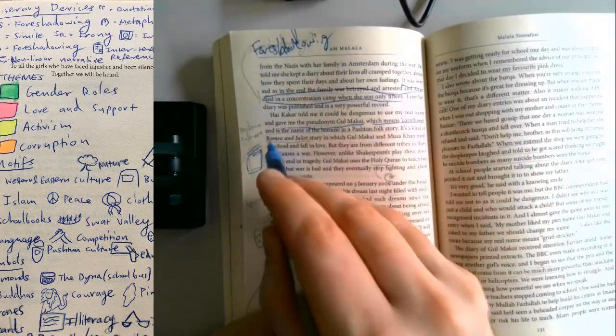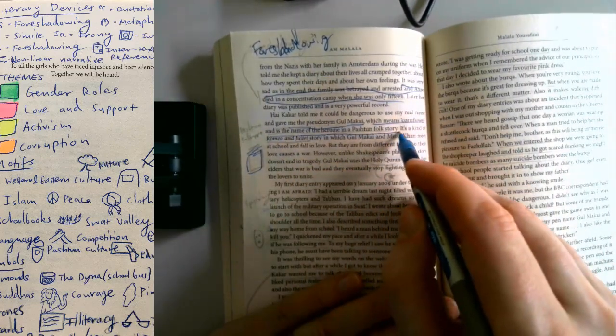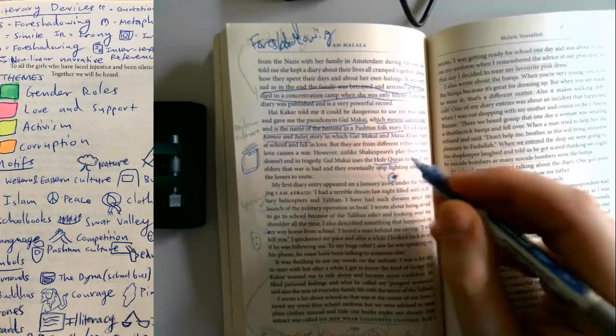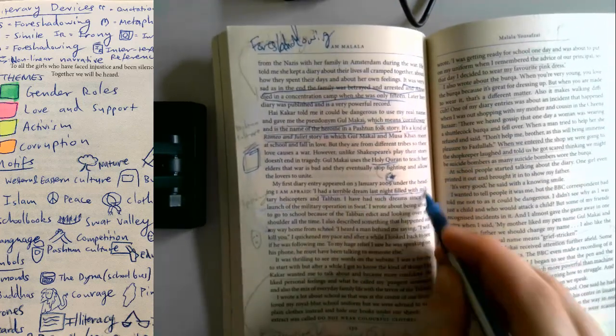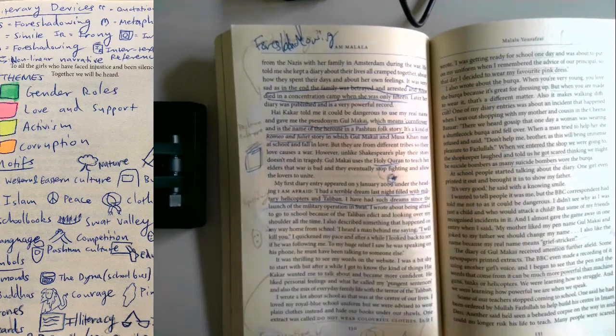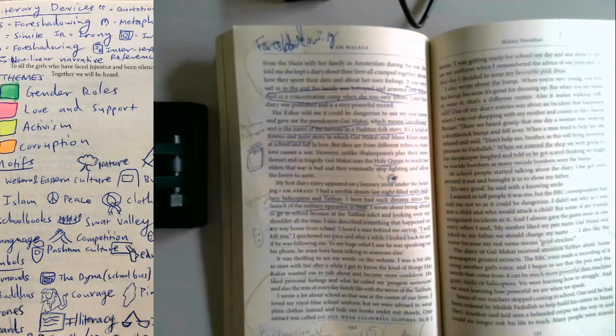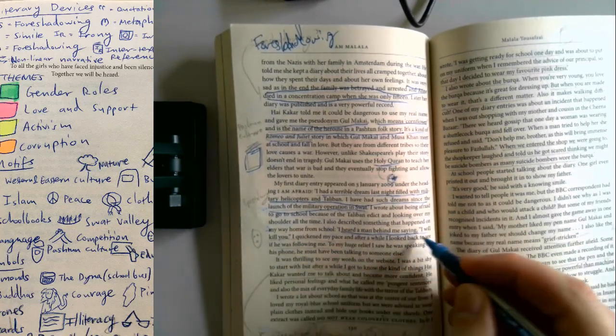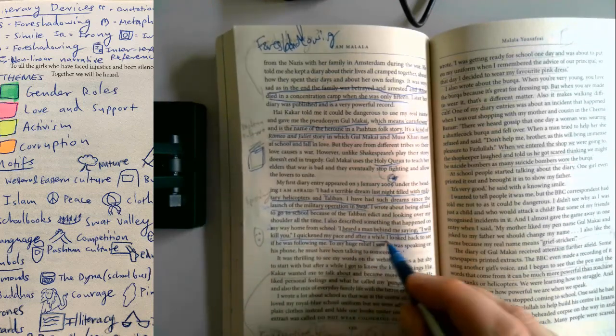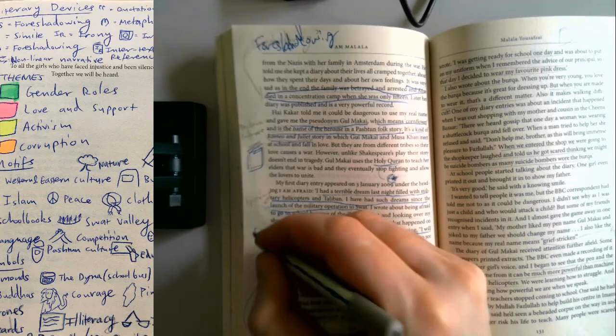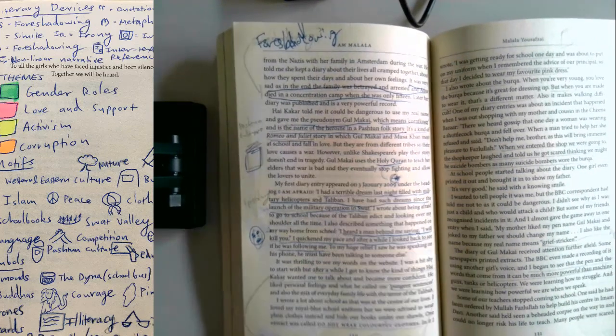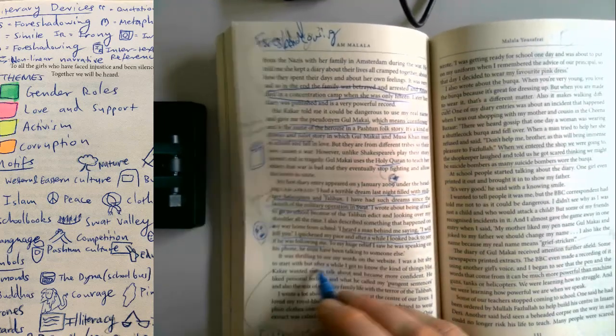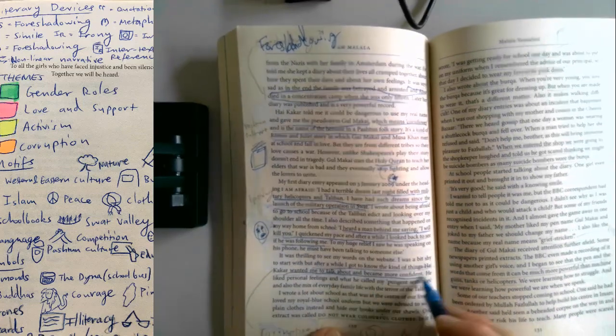The pseudonym Golan Makai, which means Cornflower, is the name of the heroine in a pastoral folk story, kind of a Romeo and Juliet story. I had a terrible dream last night filled with military helicopters and Taliban. I have had such dreams since the launch of the military operation in SWAT. So she's starting to get a bit freaked out. I heard a man behind me saying, I will kill you. After all, I got to know the kind of things Hai Kaka wanted me to talk about and became more confident.